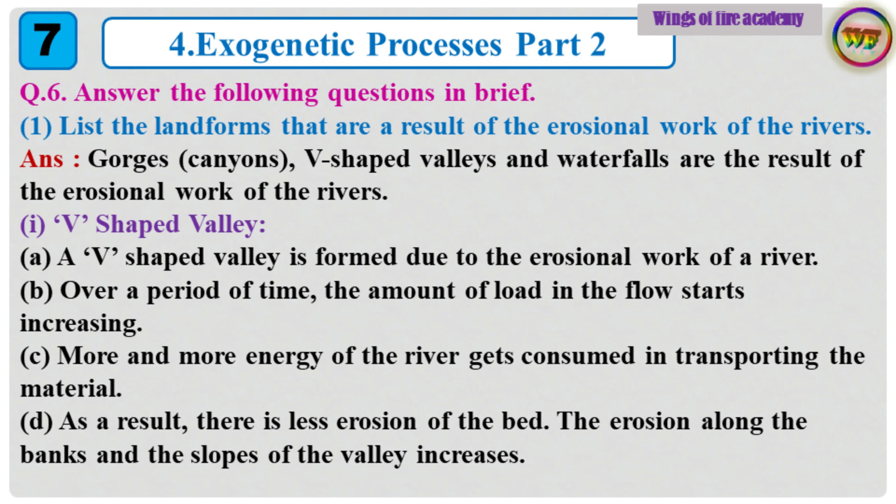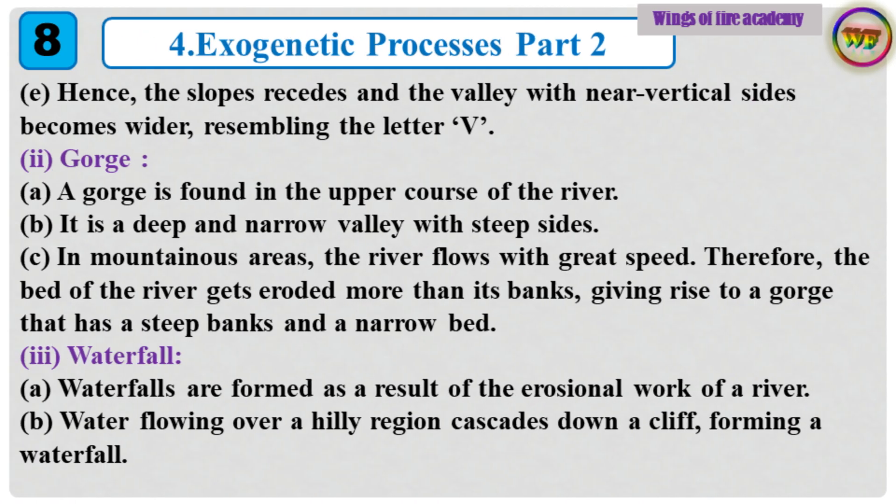A V-shaped valley is formed due to the erosional work of a river. Over a period of time, the amount of load in the flow starts increasing. More and more energy of the river gets consumed in transporting the material. As a result, there is less erosion of the bed. The erosion along the banks and the slopes of the valley increases. Hence, the slopes recede and the valley with near vertical sides becomes wider, resembling the letter V.